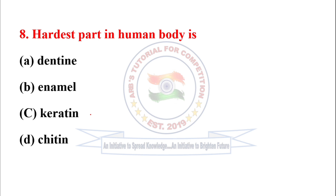Next question: The hardest part of the human body is? Option B — enamel. It is the thin outer coating of teeth and the hardest part of the human body.